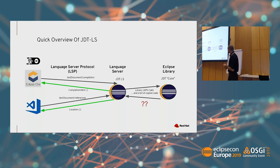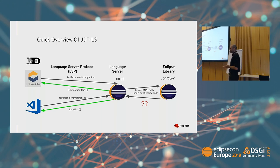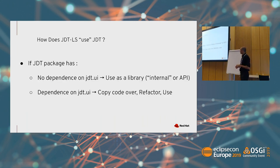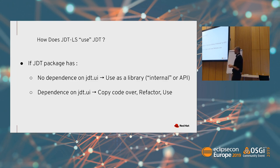You probably noticed those question marks — that's because there's actually quite a bit of copied code. JDT probably didn't imagine that many years later they'd have to provide some of these capabilities outside of the UI. So for a large part, JDTLS was actually copying over certain portions it cared about and didn't want to wait around to be stripped from the UI portion. If a package has no dependence on JDT UI at all — if it's core manipulation or just core — even if it's internal, they're fine using it directly. If it's in JDT UI, they have generally just copied it over, stripped out what they didn't need, and used it that way.